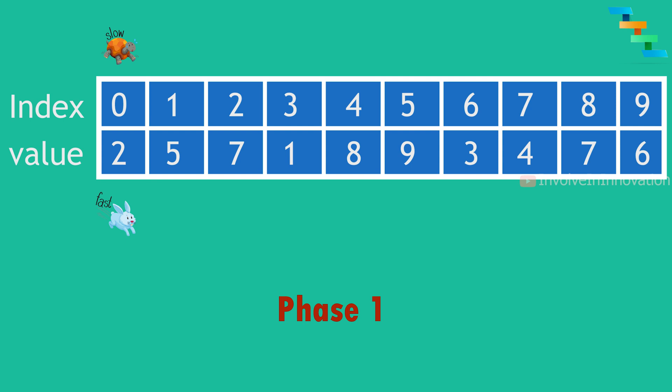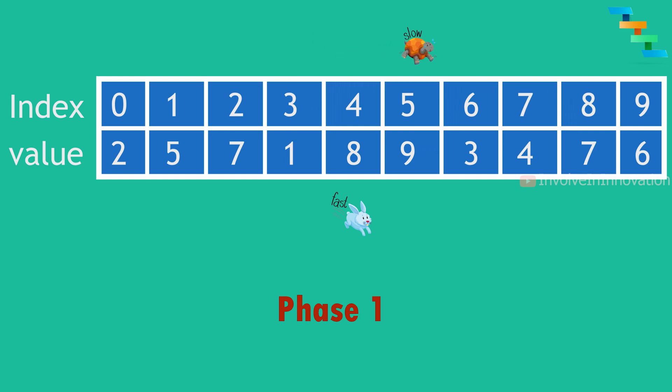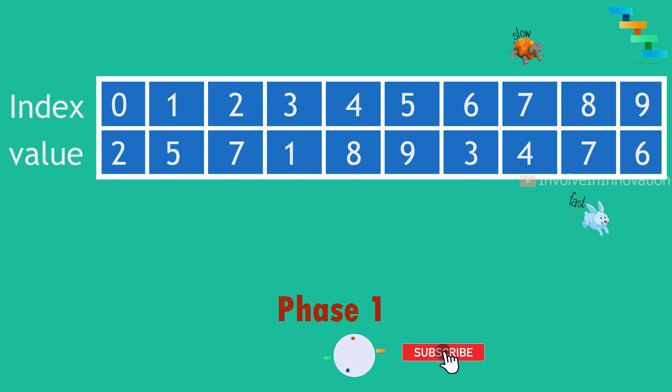Starting at index 0, the slow pointer moves one step to index 2, while the fast pointer moves two steps: first to index 2, then to index 7. At the end of iteration 1, slow is at index 2 (value 7) and fast is at index 7 (value 4). Since values differ we continue. In iteration 2, slow moves to index 7 and fast moves to index 4 then index 8. At the end, slow has value 4 and fast has value 7.